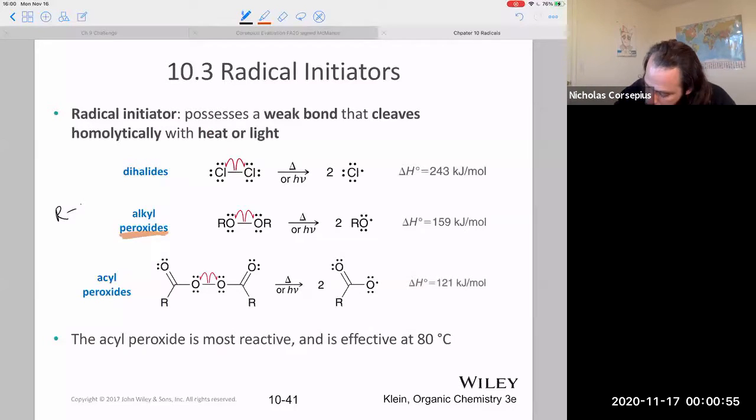A peroxide is anything that has an oxygen-oxygen bond like this. And then there are what are called acyl peroxides, which just means that they're located directly next to these carbonyl groups. And these are even more favorable, right? So you can tell how favorable it is to form these by looking at their delta Hs.